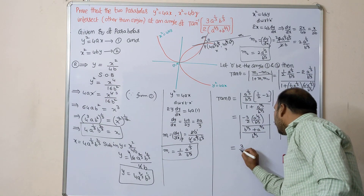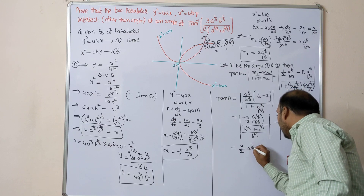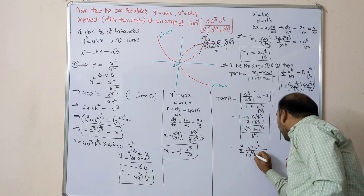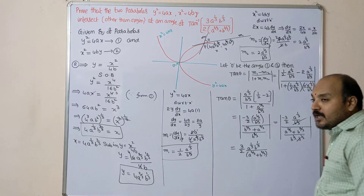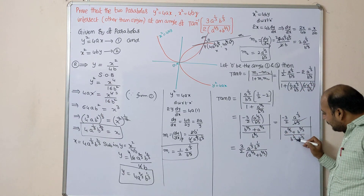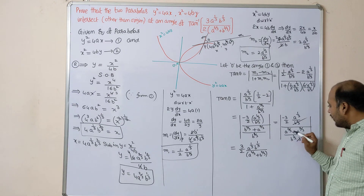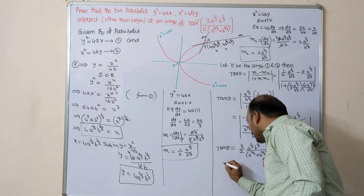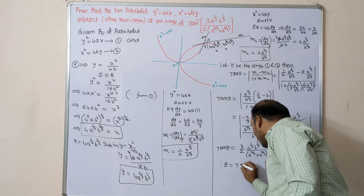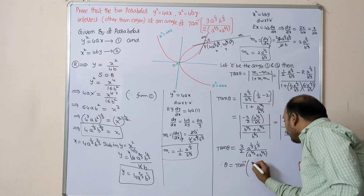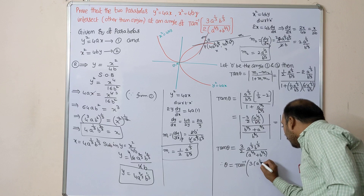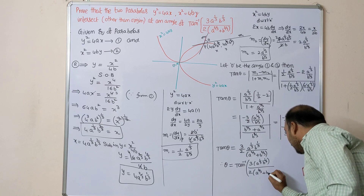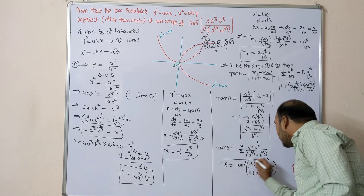Within the modulus, −3/2 becomes +3/2. Therefore tan θ = 3·a^(1/3)·b^(1/3) / (2(a^(2/3) + b^(2/3))). So theta = tan⁻¹[ 3·a^(1/3)·b^(1/3) / (2(a^(2/3) + b^(2/3))) ]. Hence the result is proved.